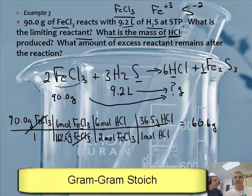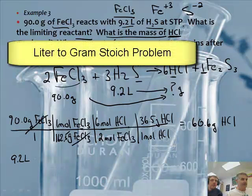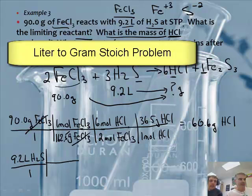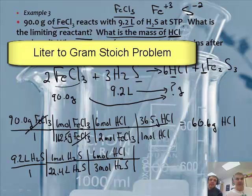And we get 60.6 grams of HCl from the FeCl₃ side. Now let's do the other one — this is a liter-to-gram problem. It's 9.2 liters of H₂S at STP, so we can use that 22.4 number. We'll say liters of H₂S to 1 mole of H₂S over 22.4.